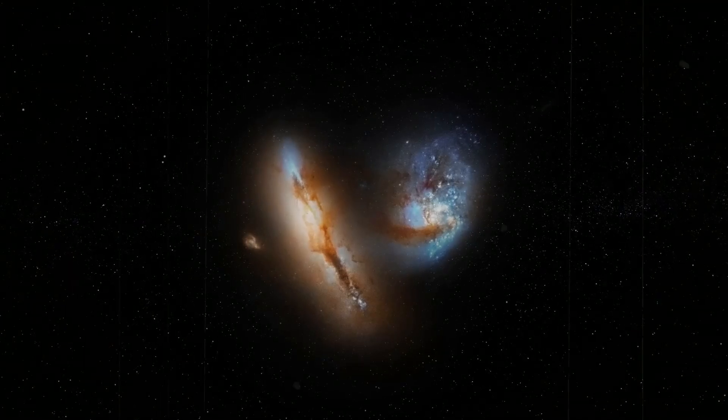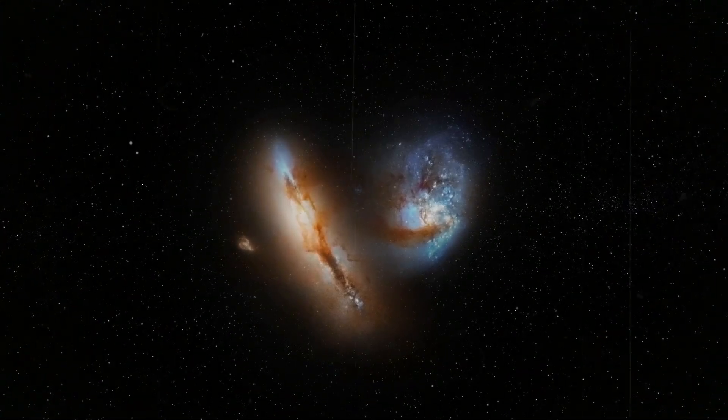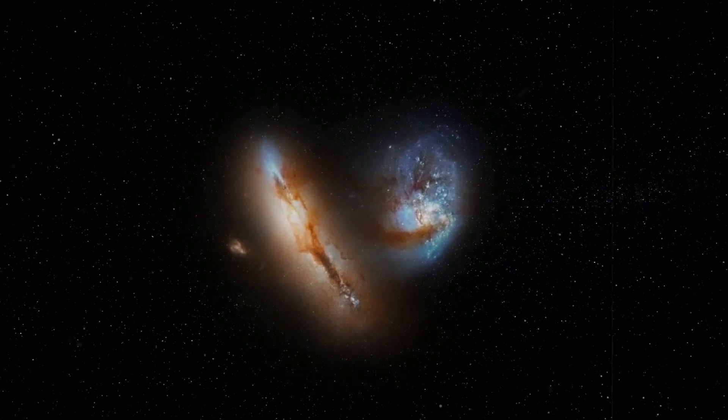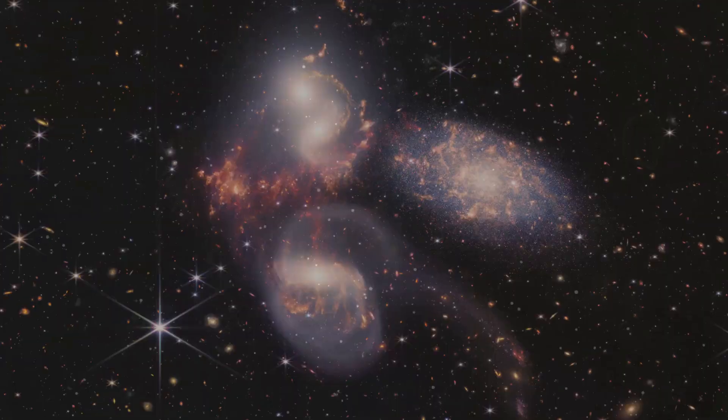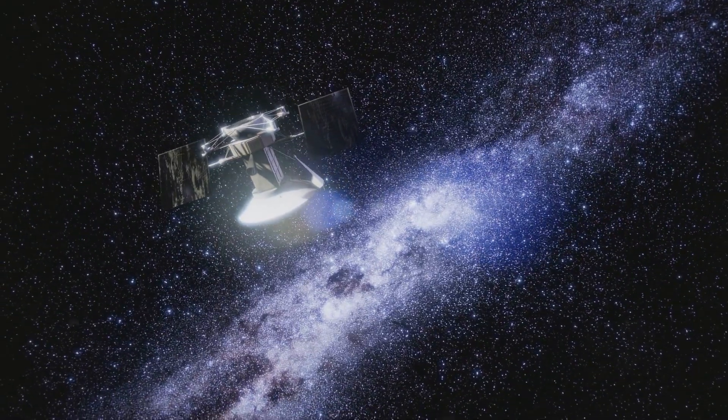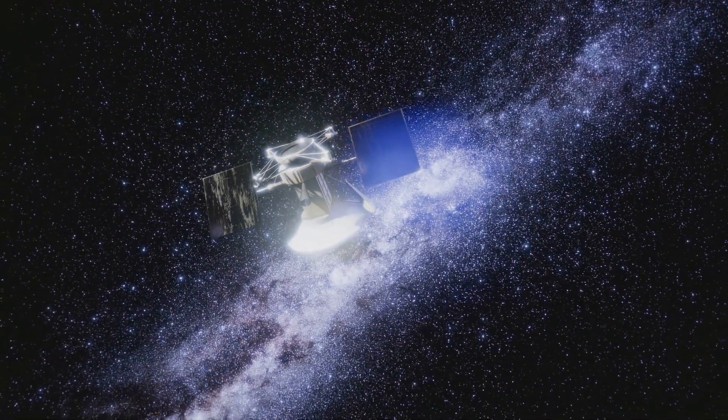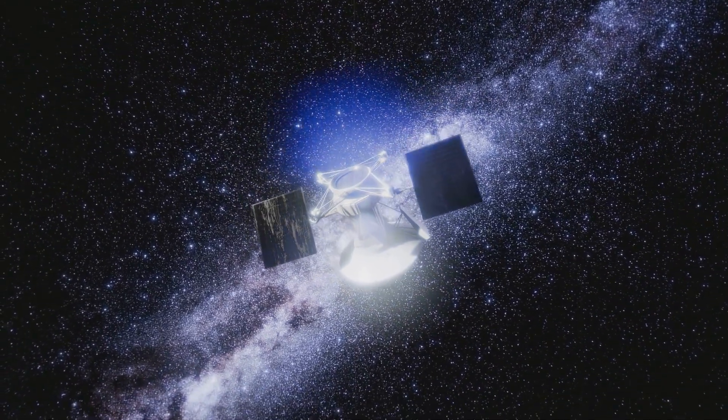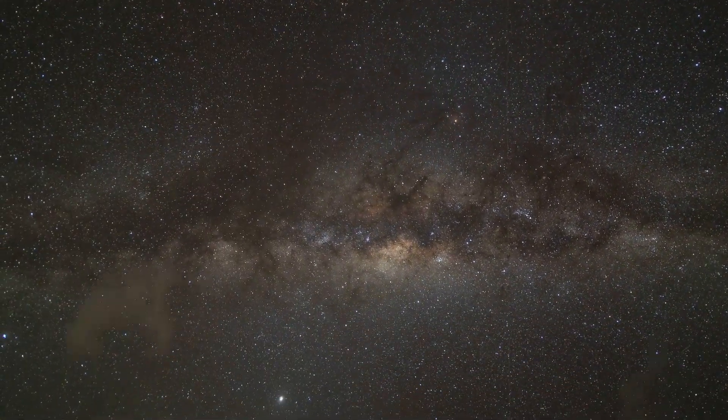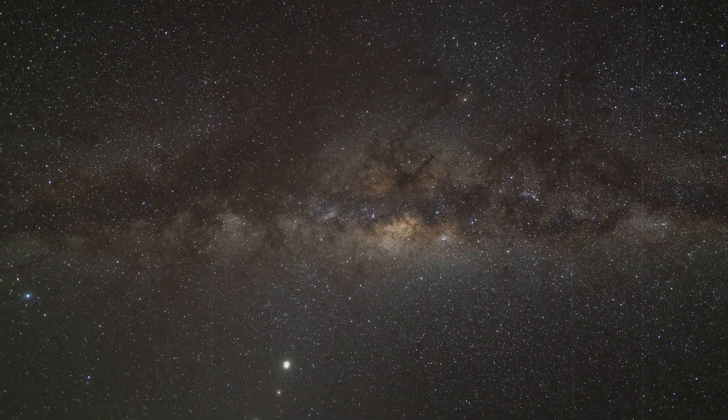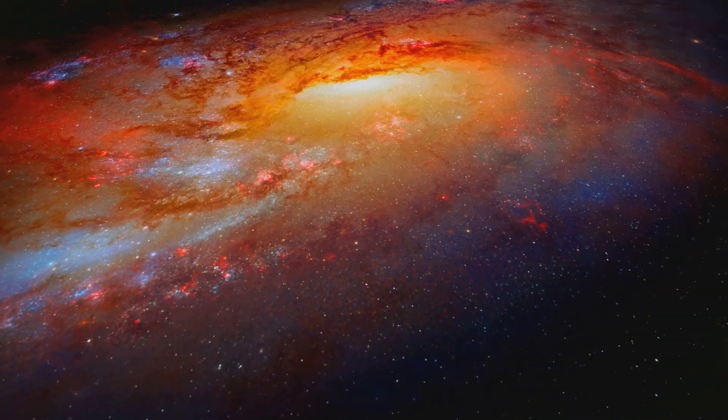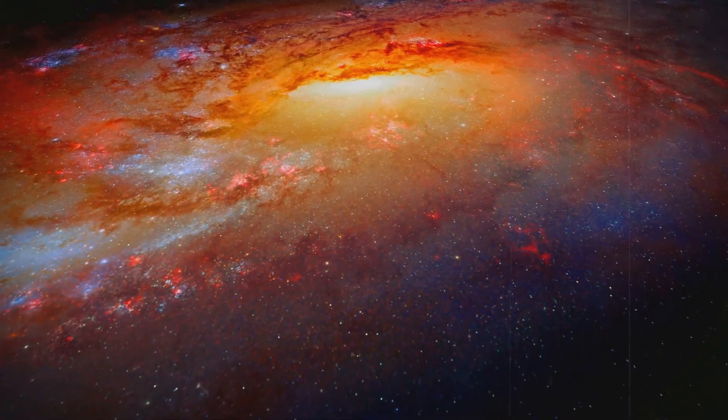Over billions of years, larger galaxies consume smaller galaxies, tearing them apart and absorbing their stars, gas, and even their dark matter. The Milky Way is currently in the midst of such a feast. The victim, a dwarf galaxy known as the Sagittarius Dwarf Spheroidal Galaxy. The Milky Way's gravity has ensnared this smaller galaxy, drawing it inexorably closer. Over time, the Sagittarius Dwarf will be stretched, distorted, and ultimately consumed by our galaxy.